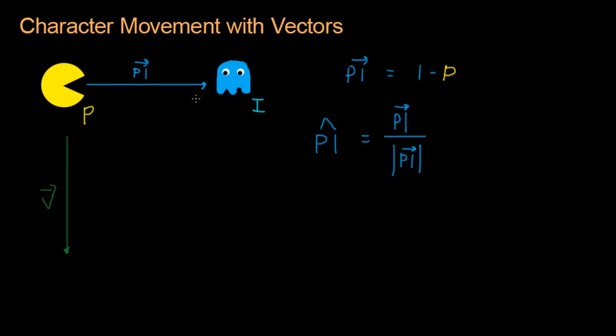And when you do this, you will always get a vector whose length is exactly one. And we can use that to store the direction that Pac-Man is looking in. Let's break that up and see how it looks in X, Y notation. PI hat equals the X component of PI divided by the length of PI. And then for the Y component, you're going to have the same thing: the Y component of PI divided by the length of PI. And that's it. Now we have our unit length vector.